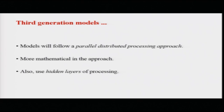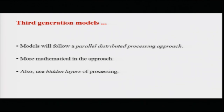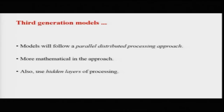That was the second generation of lexical access models. Let us move to the third generation. We will talk about two models: Jeff Elman's simple recurrent network model and the distributed cohort model. One notable thing about third-generation models is that they follow a parallel distributed processing approach - a new computational approach. These models are much more mathematical, calculation-based, and use what is called hidden layers in machine learning or neural networks, where layers of processing accumulate and do the computation between input and output layers.